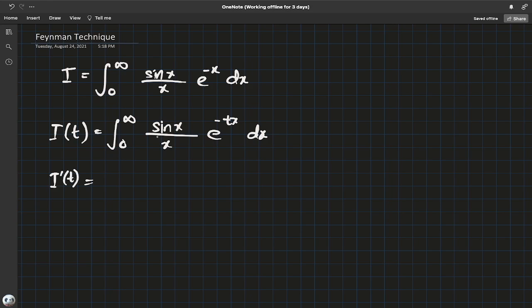Differentiate with respect to the parameter t. You get negative integral from 0 to infinity of sin x divided by x, and then differentiate using the chain rule. We'll get an x * e^(-tx) dx. The advantage of using this method is the denominator is sort of gotten rid of.